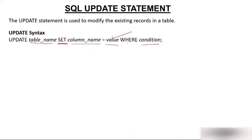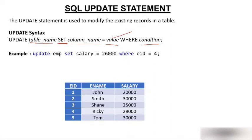Let's see the syntax in action: UPDATE imp SET salary = 26000 WHERE EID = 4. So EID = 4 is Ricky. I want to change his salary to twenty-six thousand. Currently he is getting twenty-eight thousand. On running the query, the salary is now twenty-six thousand — the update is working.